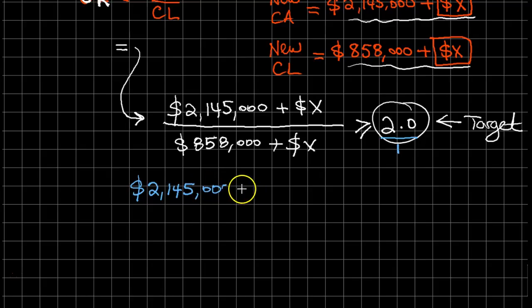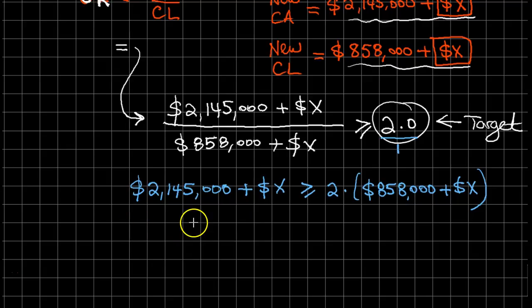That would be greater than or equal to things multiplied by two. So two times $858,000 plus the X dollars. In the second step, we expand the right hand side. Two times $858,000 would be $1,716,000, and two times X. We just distribute the two over the two things inside.